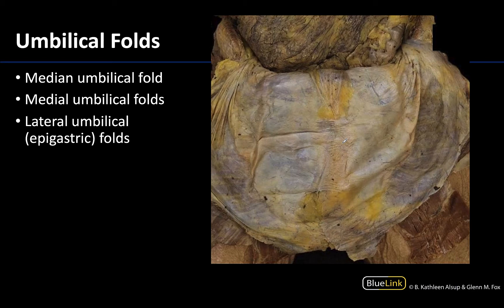So let's start with the median umbilical fold — I'm going to outline where that is located. This is unpaired and it's in the midline, so there is only one median umbilical fold.